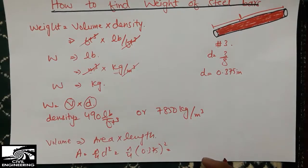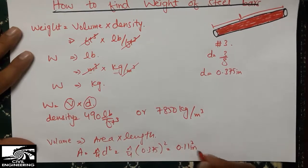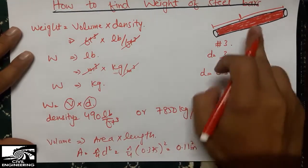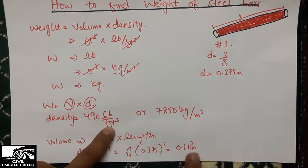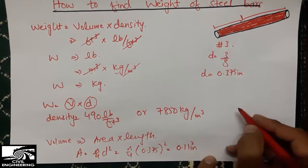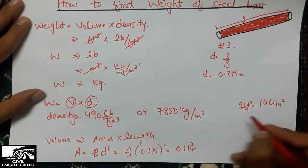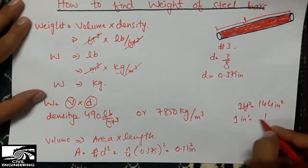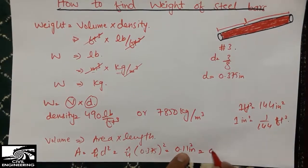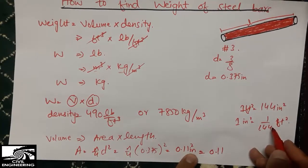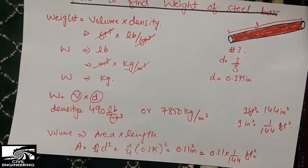This gives an area of approximately 0.11 square inches. Since we are working in feet, we must convert square inches to square feet. One square foot equals 144 square inches, so one square inch equals 1/144 square feet. Therefore: 0.11 ÷ 144 gives the area in square feet.